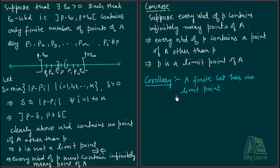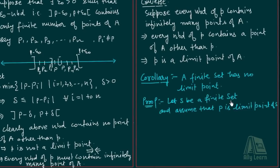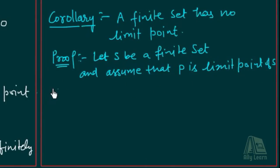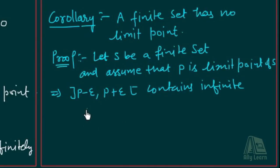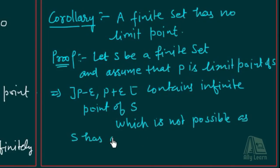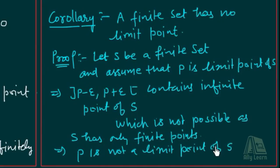Yeh toh wahi baat ho gayi — jaise kisi box mein do bowls hain aur koi aapko kahe ki ismein se teen bowls pick kar lo, toh kar sakte ho? Nahi. Toh agar hamare paas koi finite set hai, that means that set cannot have any limit point. So a finite set has no limit points. Let S be a finite set and assume P is a limit point of S. By the last theorem this implies (P minus epsilon, P plus epsilon) contains infinite points of S — which is not possible as S has only finite points. This implies P is not a limit point of S.